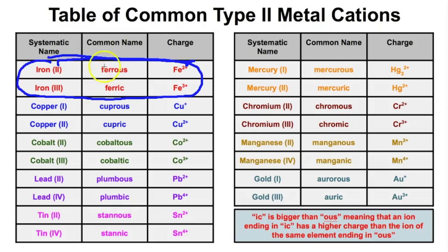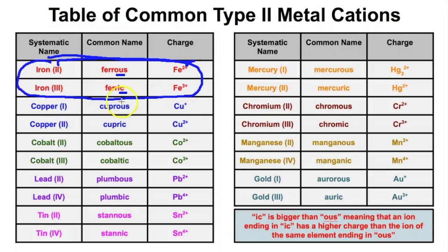Using the common name, the iron 2+ ion is called ferrous — we use the Latin root for iron, ferrum, and add an -ous ending to denote the lower charge. Iron 3+ uses the common name ferric. So when using the common name system: -ous means the lower of the two charges, and -ic means the higher of the two charges.